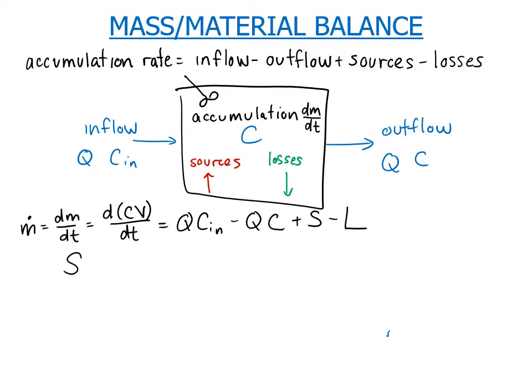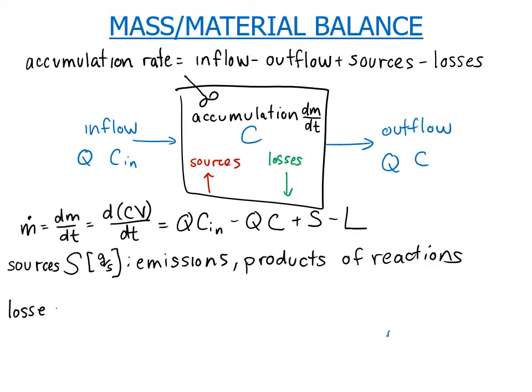Our sources S are in units of mass per time so grams per second and these could be things like emissions or products of reactions. And then we can have different loss processes, L also in units of grams per second. This could be deposition which involves gravitational settling or sticking to surfaces and also loss by reaction.